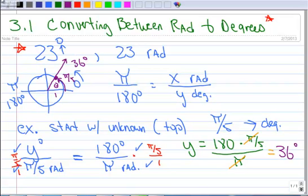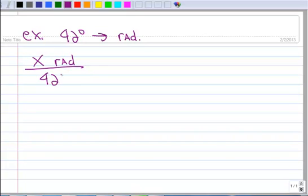Let's do a new example. Let's convert 42 degrees to radians. So let's start with what we don't know. X radians is to 42 degrees. This is equal to pi radians—see how that goes on the top because I have both radians on the top?—is to 180 degrees. Multiply both sides by 42 degrees.